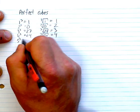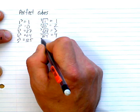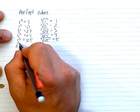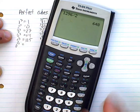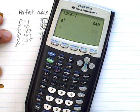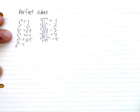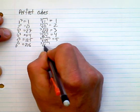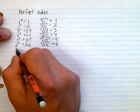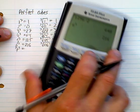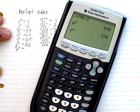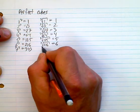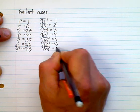5 cubed is 125, so the cube root of 125 is 5. 6 cubed is 216, so the cube root of 216 is 6. 7 cubed — these I have to work out — is 343, so the cube root of 343 is 7.